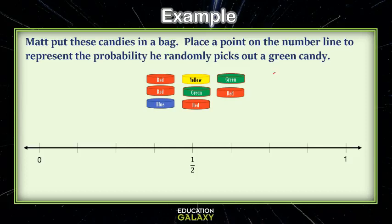Well, he has two green candies out of eight total candies. On our number line, from zero, there are eight spaces. So that means one would be eight out of eight. So then here we have one eighth, two eighths, three eighths, four eighths, which is one half.